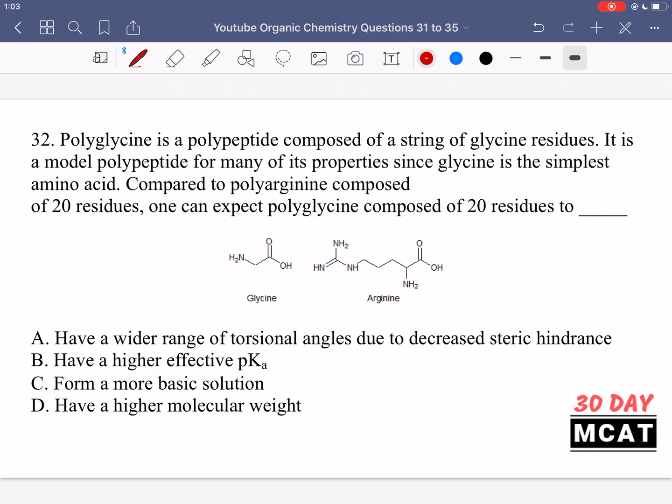We have a polypeptide made up of many different amino acids, 20 residue chains. One is made up of glycine, polyglycine, and then we have polyarginine. We're asked to compare the two.